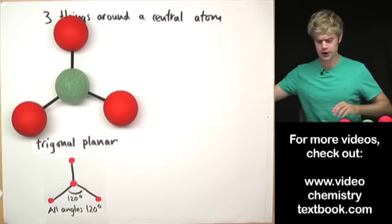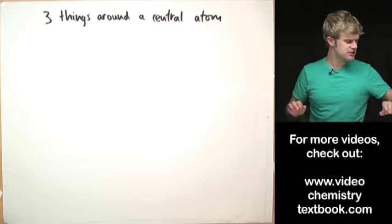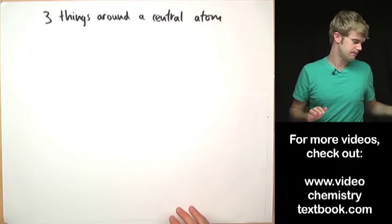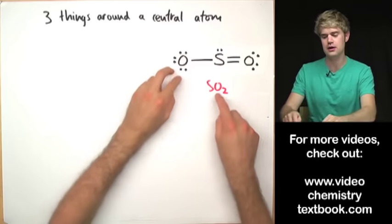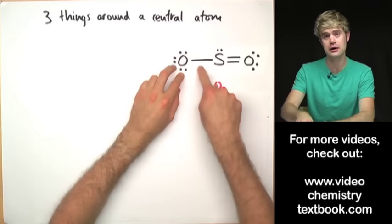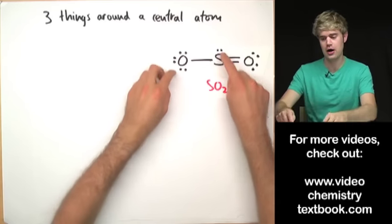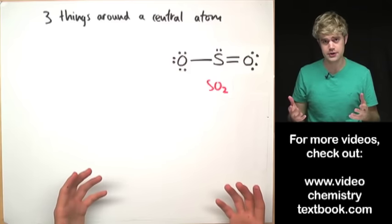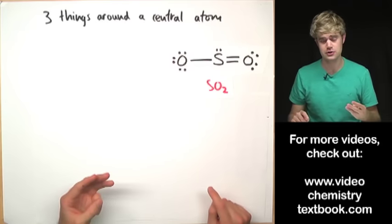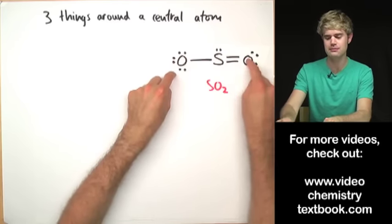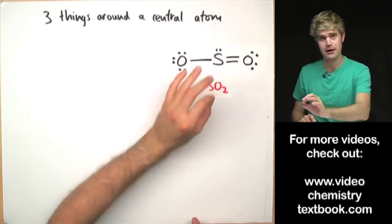Now we're going to look at some molecules that have three things around them, but where these three things are not all bonds. Here's an example: SO₂. It has three things around the central atom — a single bond, a double bond, and an unshared electron pair. These three things all have electrons in them so they all want to push away from each other. You might think SO₂ is linear with all atoms lined up in a row, but that's not right because you're not taking this unshared electron pair into account.